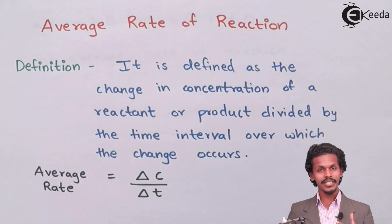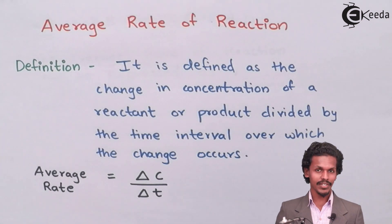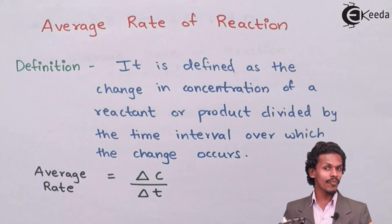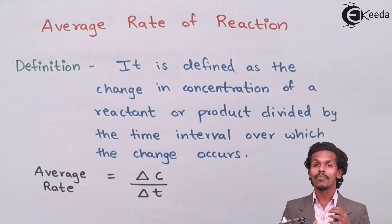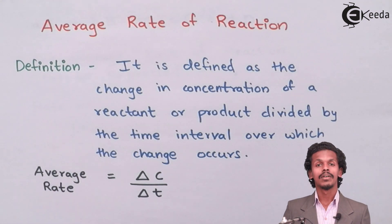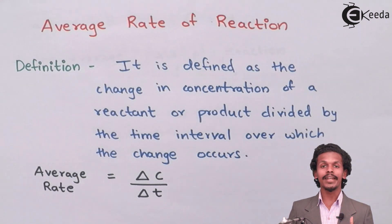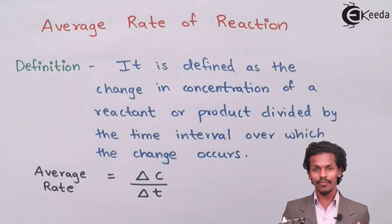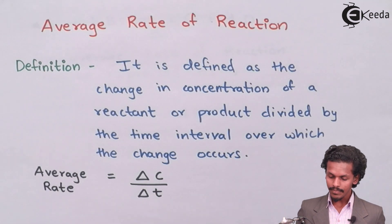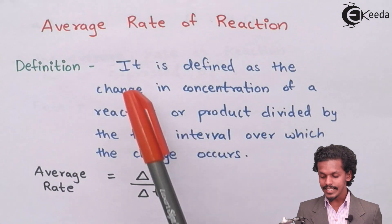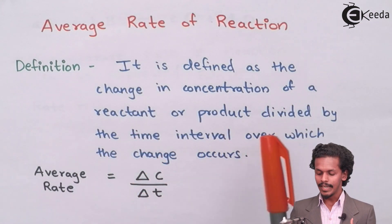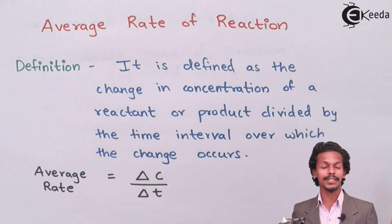Starting with the first type, the average rate of reaction. Average rate of reaction is defined as the change in concentration of reactant or change in concentration of product divided by the time interval over which the change occurs.